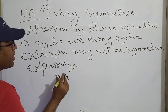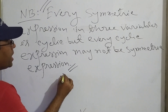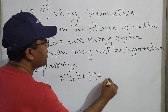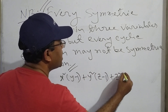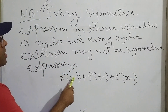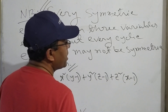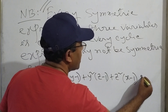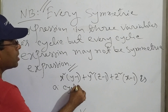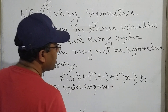For our next example, consider P of x, y, z equals x squared times (y minus 1) plus y squared times (z minus 1) plus z squared times (x minus 1). This is a cyclic expression. We need to prove it is cyclic.